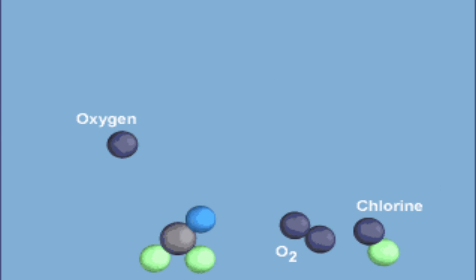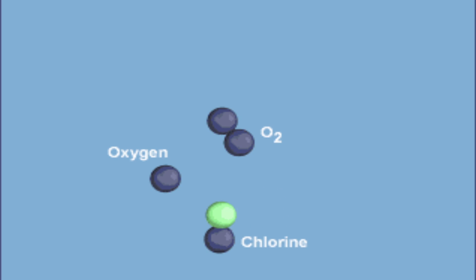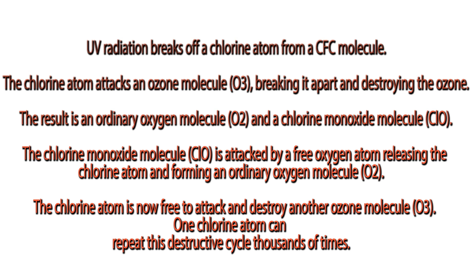UV radiation breaks off a chlorine atom from a CFC molecule. The chlorine atom attacks an ozone molecule (O3), breaking it apart and destroying the ozone. The result is an ordinary oxygen molecule (O2) and a chlorine monoxide molecule (ClO). The ClO molecule is attacked by a free oxygen atom, releasing the chlorine atom and forming another O2 molecule. The chlorine atom is then free to attack and destroy another ozone molecule (O3). One chlorine atom can repeat this destructive cycle thousands of times.